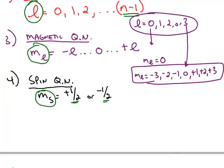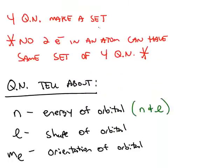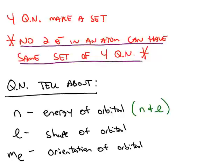The spin is always either plus 1 half or minus 1 half. All together, those four quantum numbers make up a set, and no two electrons in an atom can have that same set of four quantum numbers. So if you're looking at an atom with 80 electrons, all 80 electrons have a unique set of four quantum numbers — they may have three of the four the same, but they must have the fourth quantum number different.